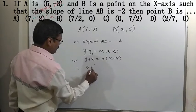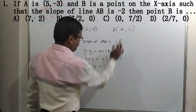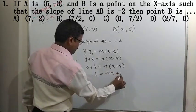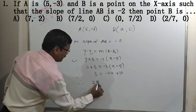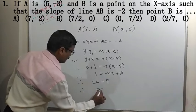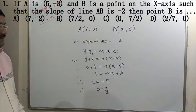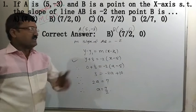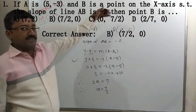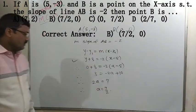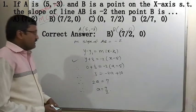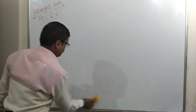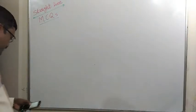So the equation becomes y + 3 = -2(x - 5). Since point B(a, 0) also lies on this line, substituting y = 0 and x = a gives 0 + 3 = -2(a - 5), which gives 3 = -2a + 10, so 2a = 7, therefore a = 7/2. The correct answer is option D: point B is (7/2, 0).